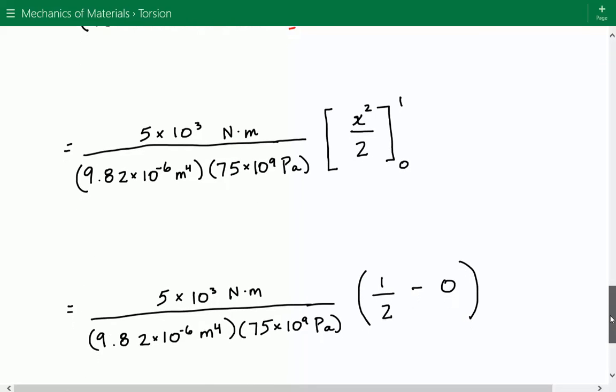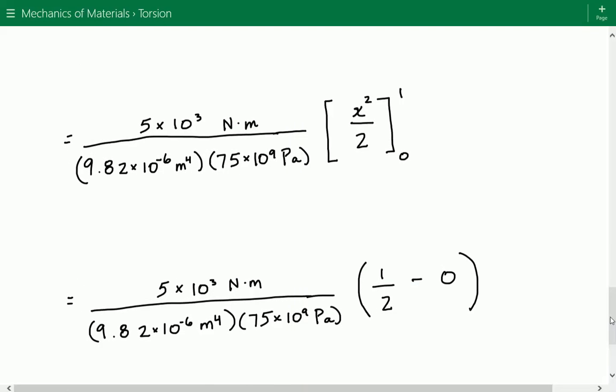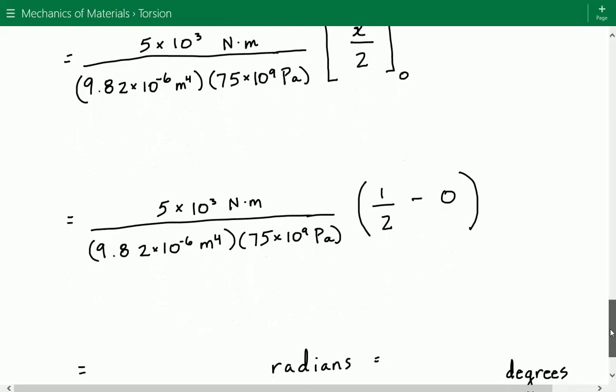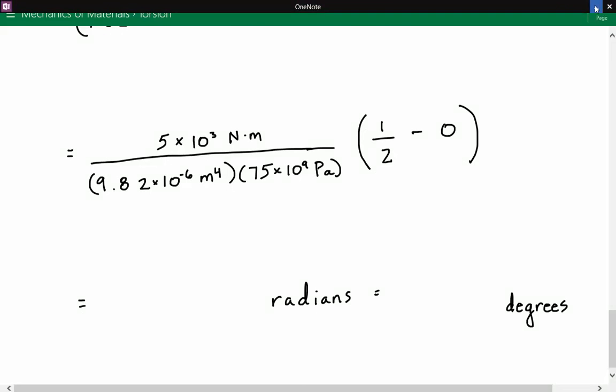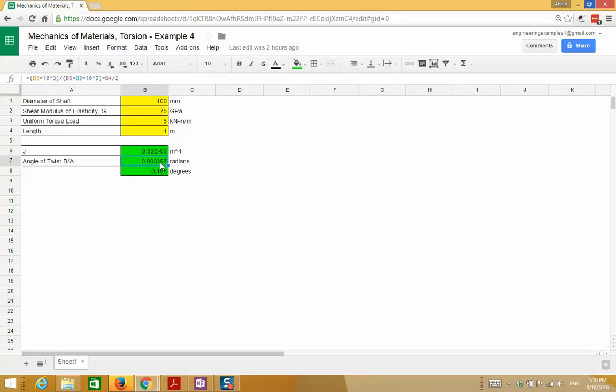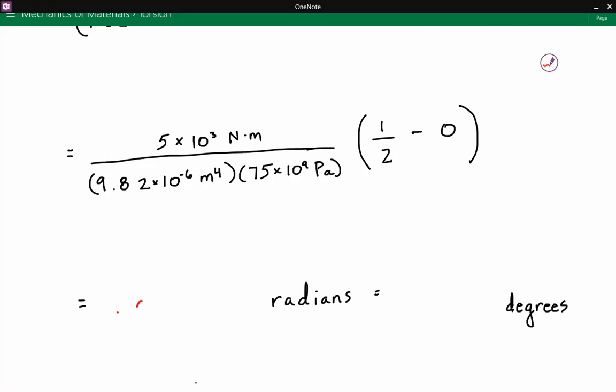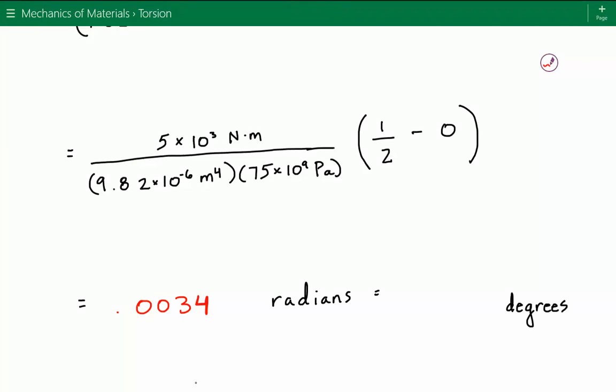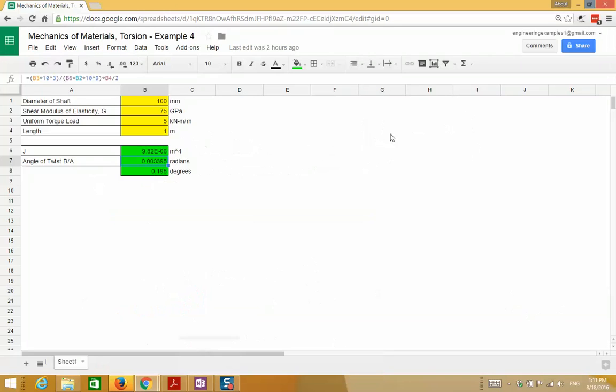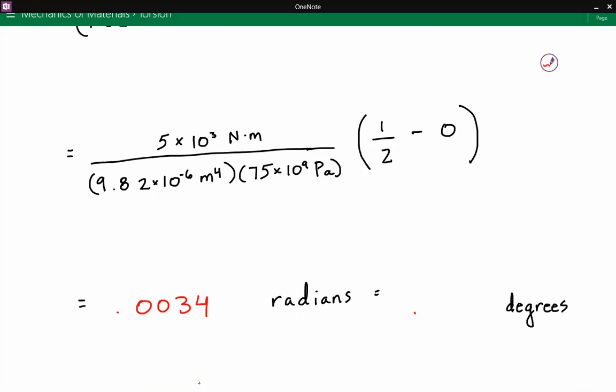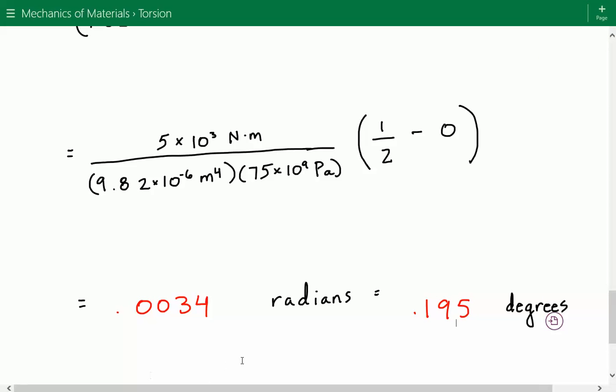We find that the angle of twist equals 0.0034 radians, or 0.195 degrees. This is our final answer.